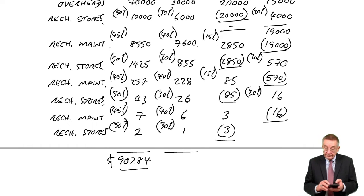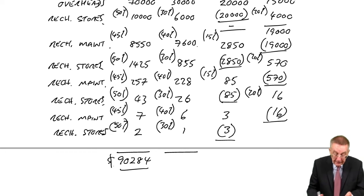And to Y, 30,000, 6,000, 7600, 855, 228, 26, 6, 1. 44,716.